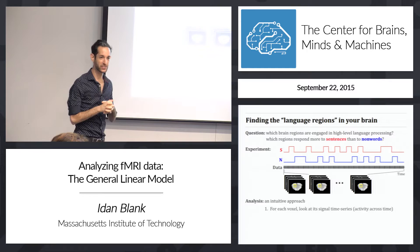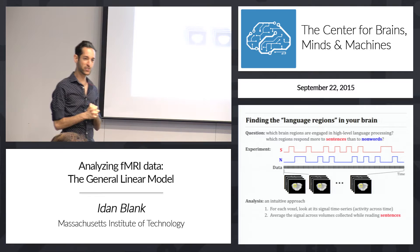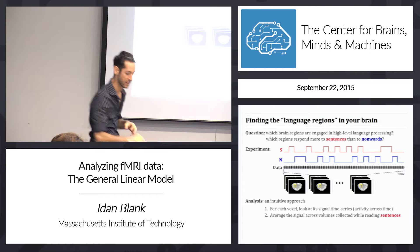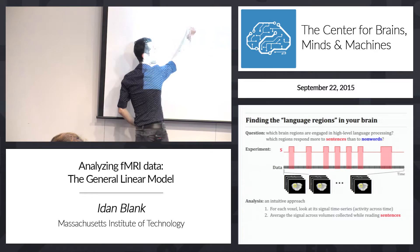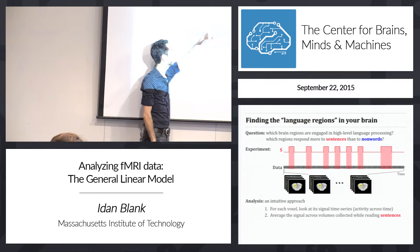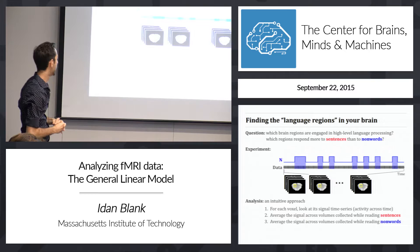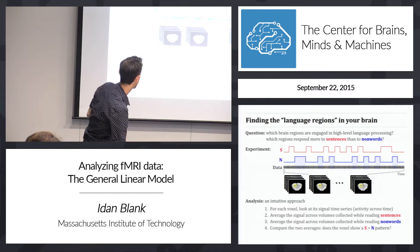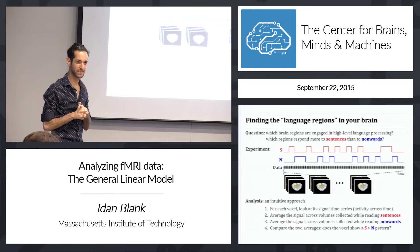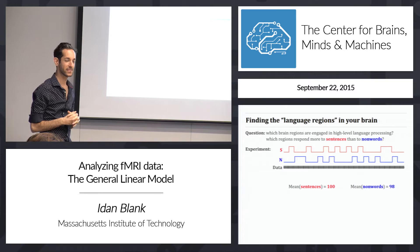For each voxel, we look at its time series — activity across time — and then we average the signal across volumes collected while the participant was reading sentences. Whenever you see a bump in the red plot, those volumes were collected when the participant was reading sentences. We average all activity during sentences, do the same for non-words, and then compare the averages — asking whether the average for sentences is bigger than the average for non-words.